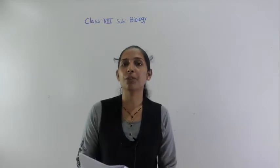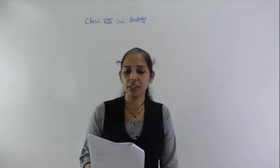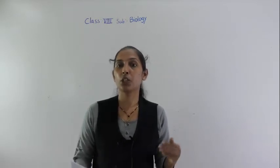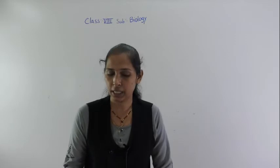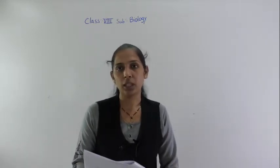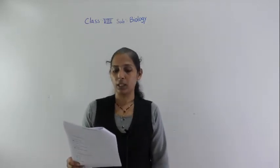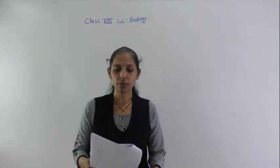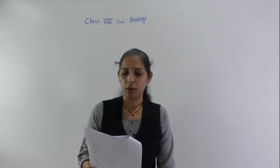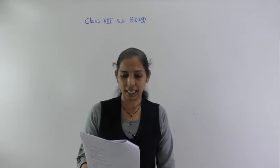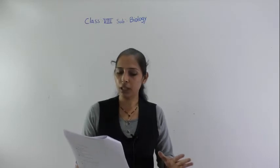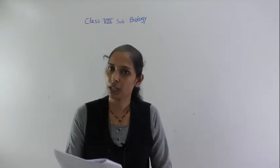Question number 55: seed drill is used to? It is a type of agricultural implement used to sow the seeds. Option one is correct — seed drill is used to sow the seeds. Question number 56: when plants of the same kind are cultivated at one place on a large scale it is called a crop. Option one is correct, that is crops.